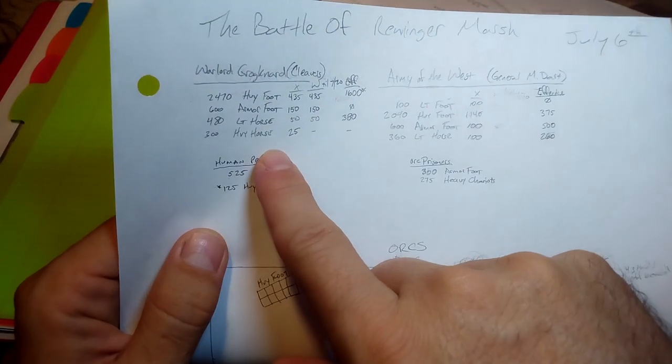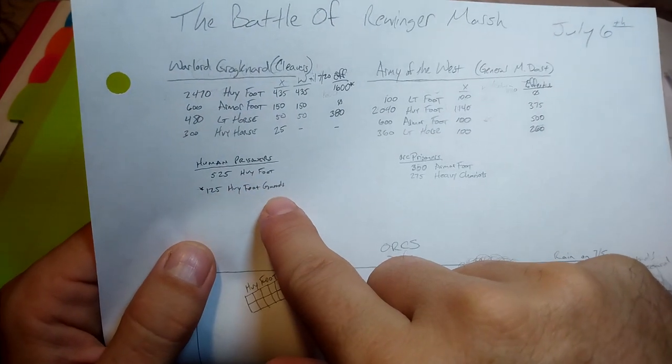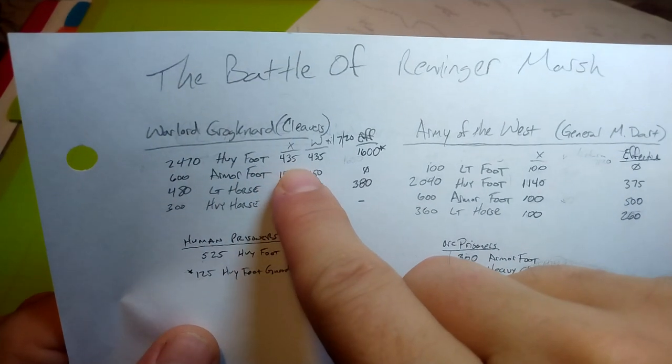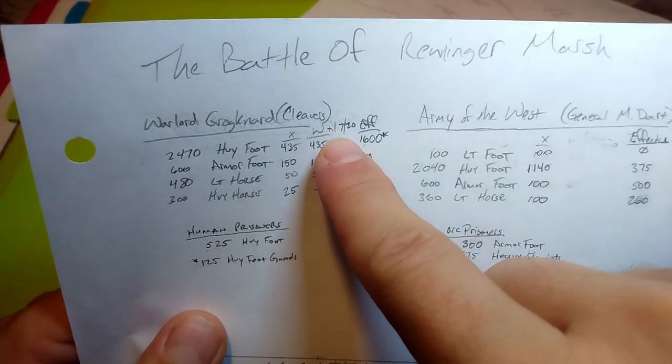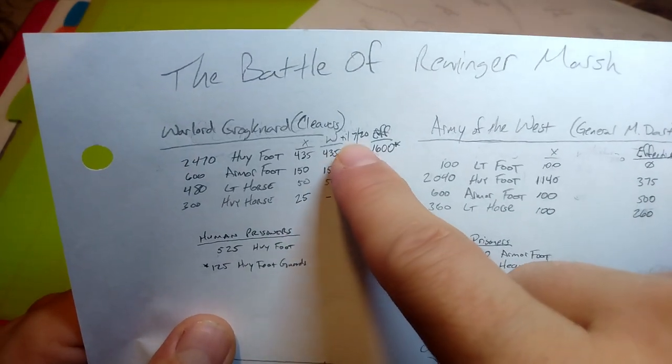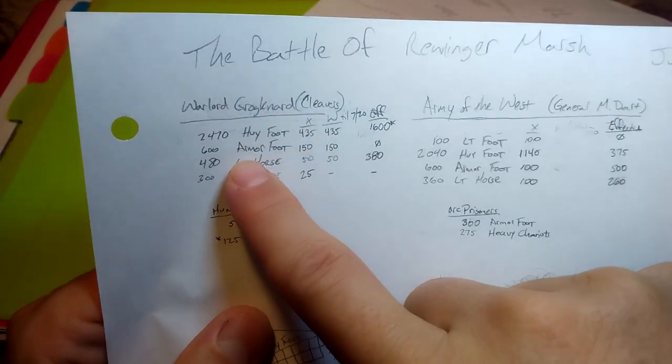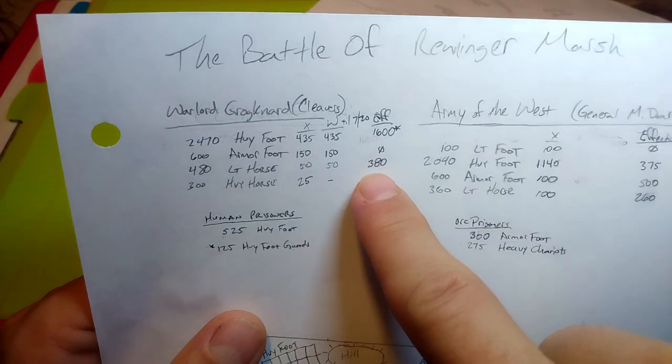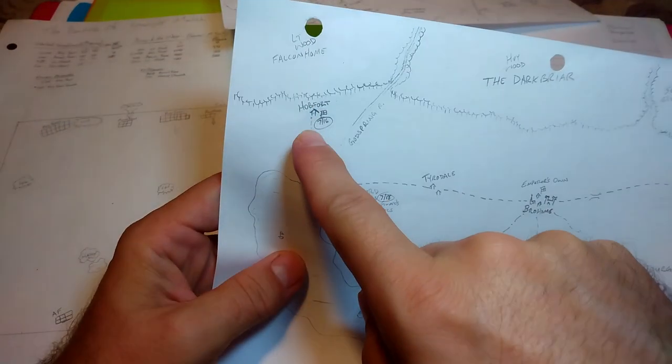For their part, Grochnard was able to capture 525 heavy foot and 125 guards. The orcs survived, they went in with 2,500, lost about 900 casualties through the tabletop play. Half were dead, half are wounded. They will have to retreat to the nearest village for two weeks. On the 20th of July, they will become available. So this army of the cleavers is now 1,600 and 380. We need to figure out what's going to happen to them.